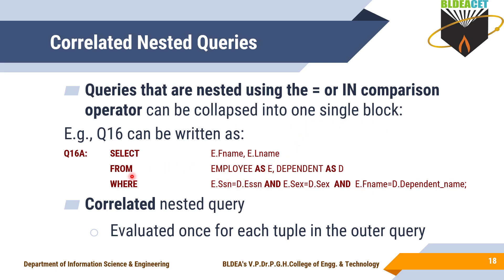You can take the inner query table and the outer query table and specify them in a single FROM clause. The earlier WHERE condition using IN can be collapsed along with the conditions of the inner query into a single block — you can write it this way as well.